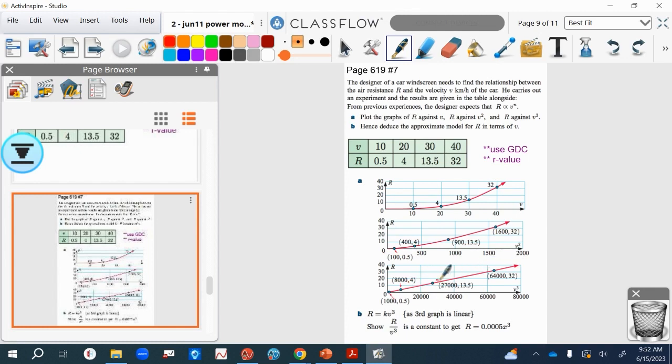Look at this. If we plot it against v cubed, there we go. So if we plot r against v cubed, it actually does give us a linear relationship. So that is going to be the model then for r in terms of v, because it does give us a linear relationship.